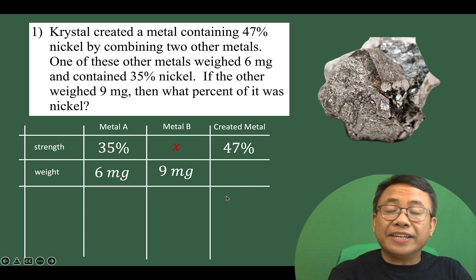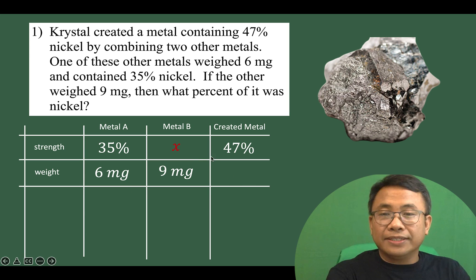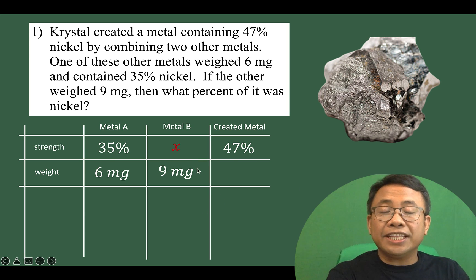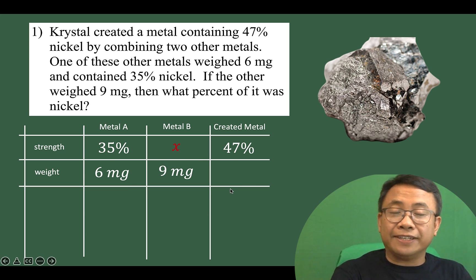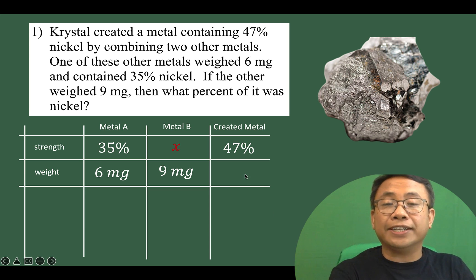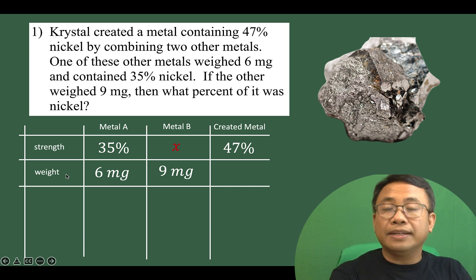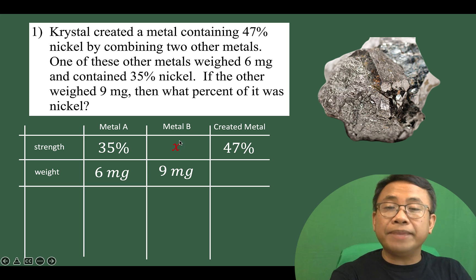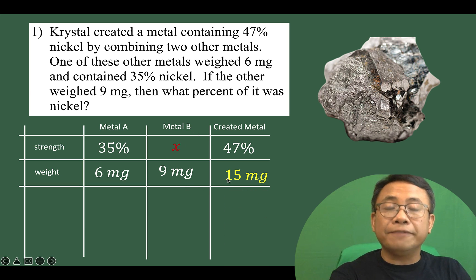Let's use a different color: red is for the unknown, white is for the given, and yellow for the computed value. Now if metal A weighed 6 milligrams and metal B weighed 9 milligrams, the combined weight would be 15 milligrams for the created metal.